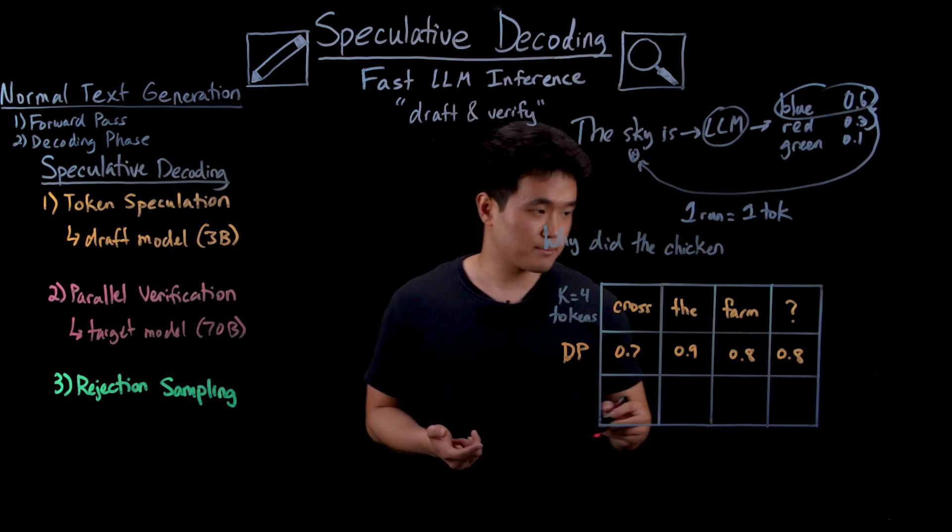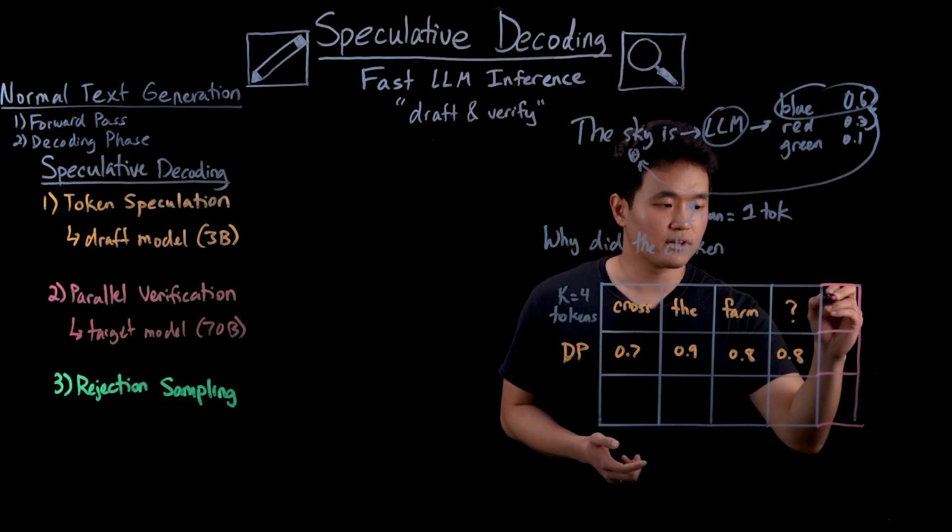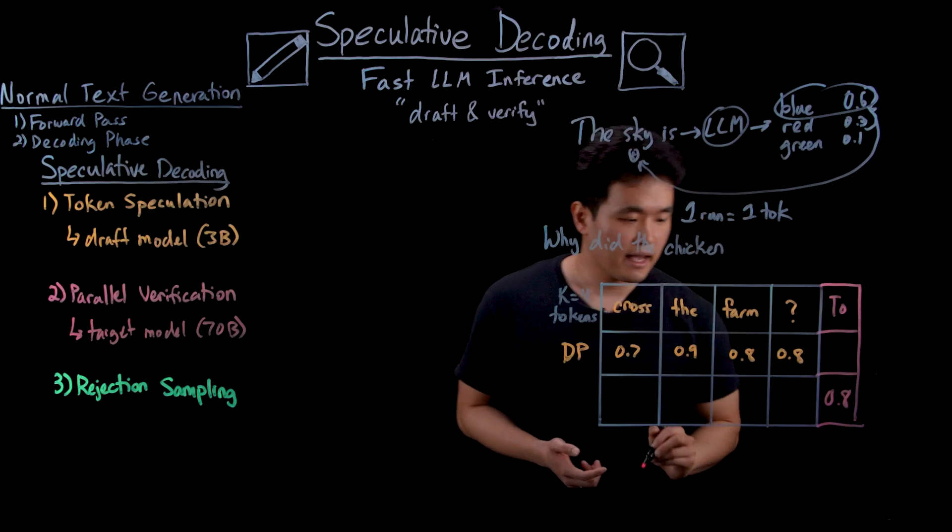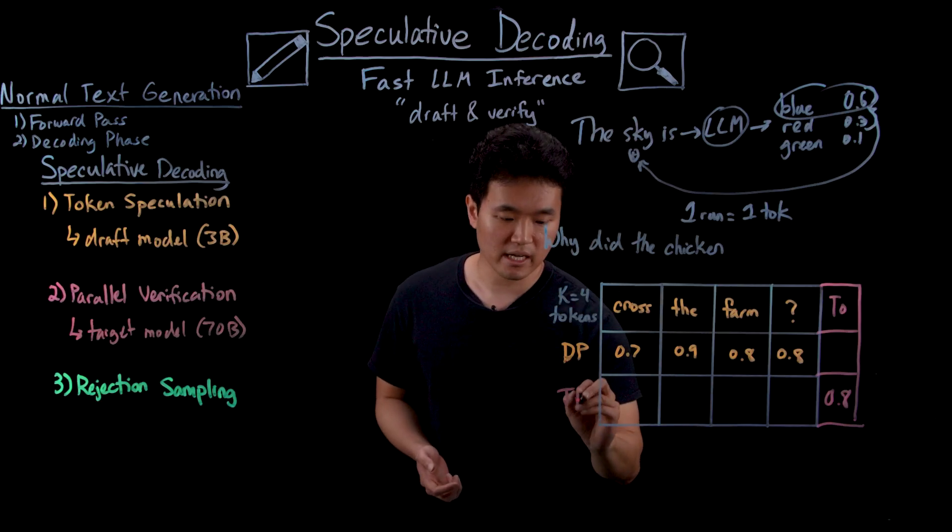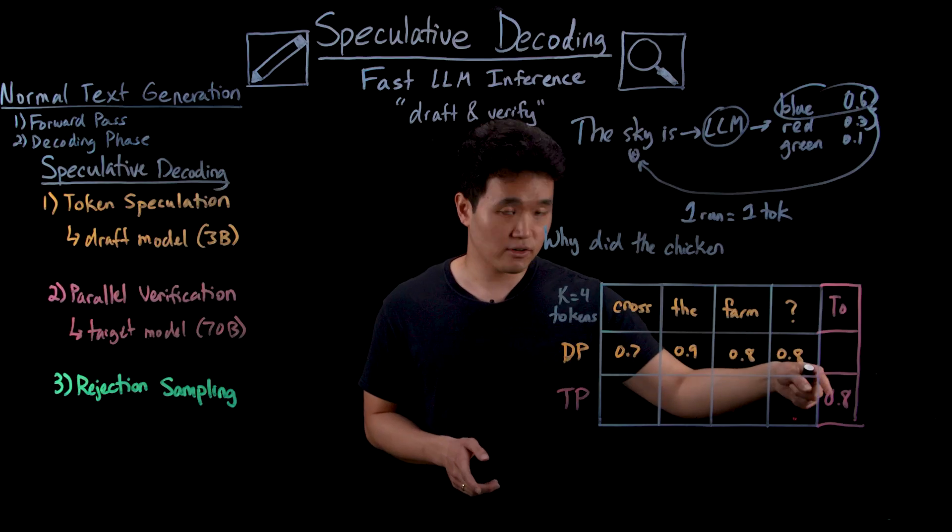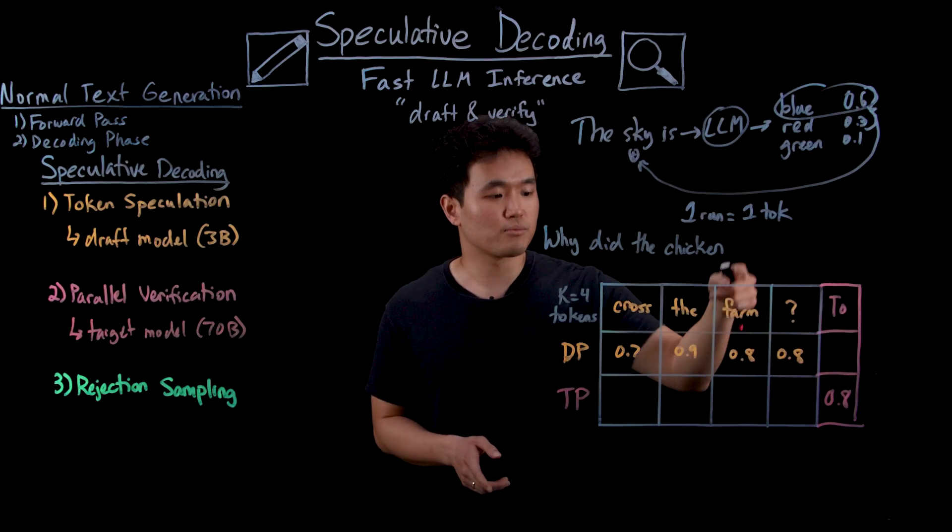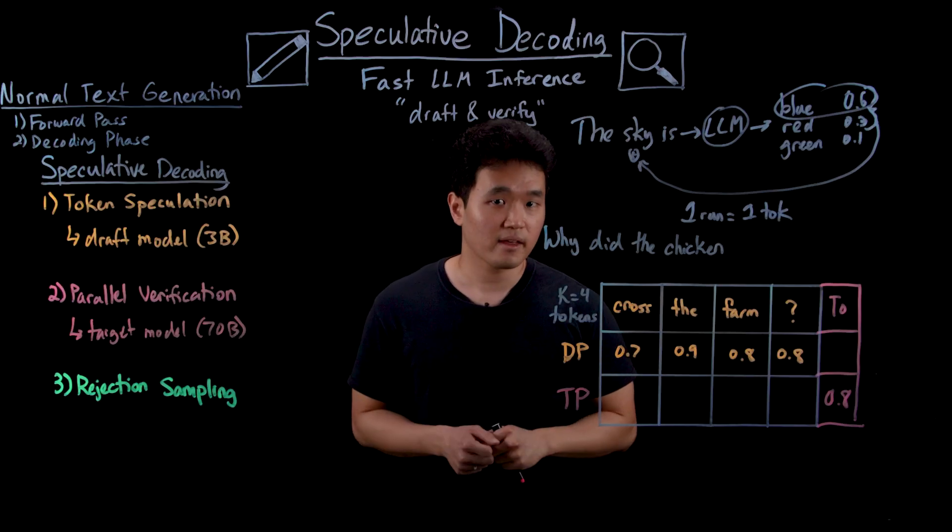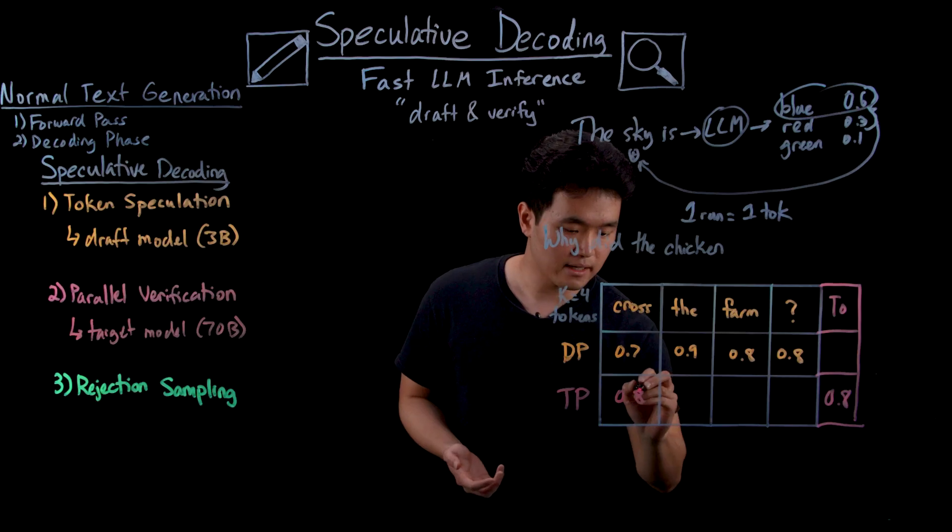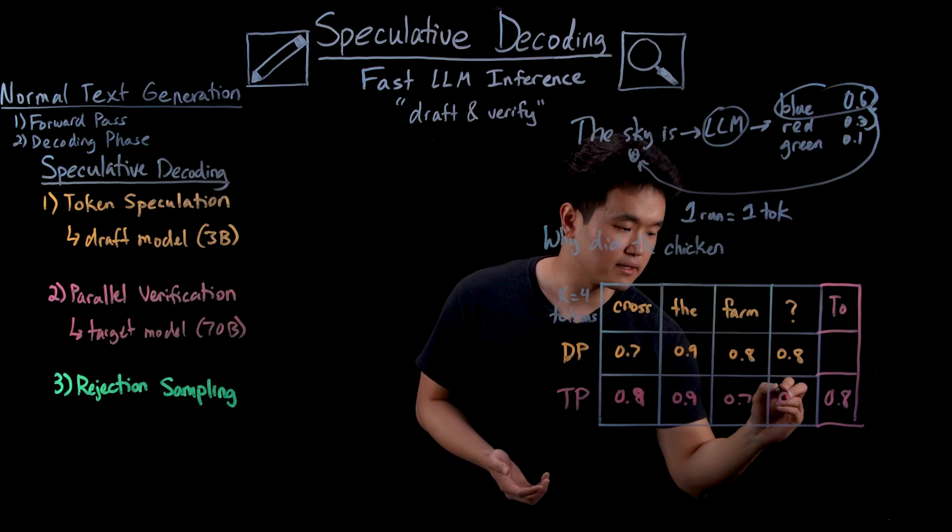So suppose in our example that the target model guesses that the next word is to with a probability of 0.8. And let's call these TP for target probability. Now what's cool here is that in addition to getting the next token's probability, we also get the target model's confidence for all the previously speculated tokens. So say in our example that these confidence levels are 0.9, 0.9, 0.7, and 0.9.